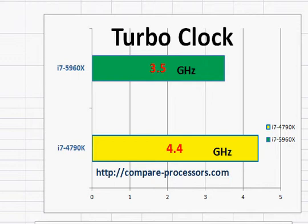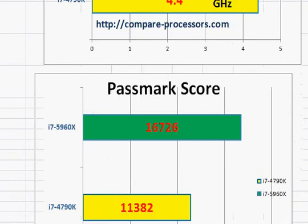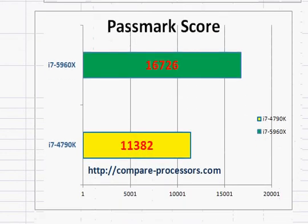With hyperthreading, the i7-5960X will still be way ahead, and that's where its usefulness comes in. As we can see in the Passmark score, which mostly reflects the multi-threaded situation, the 5960X is substantially faster than the 4790K.